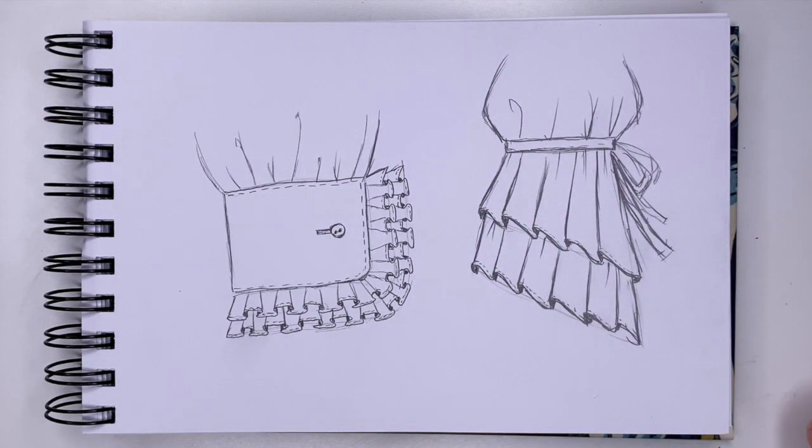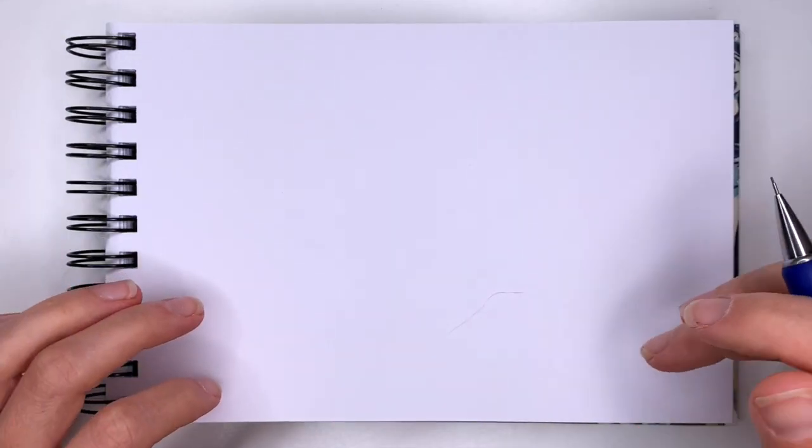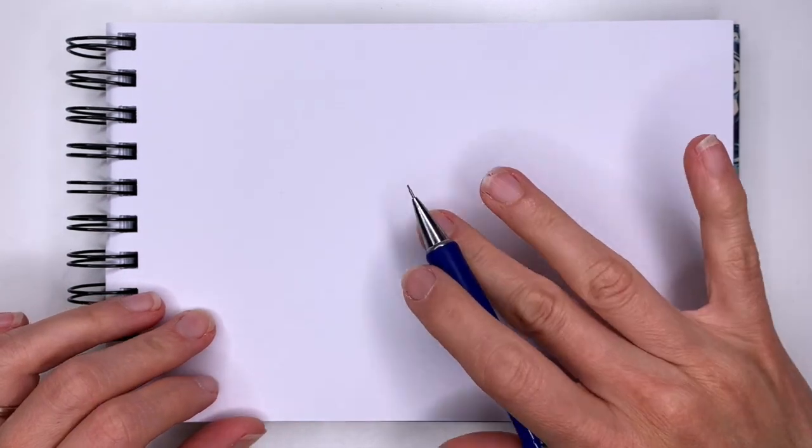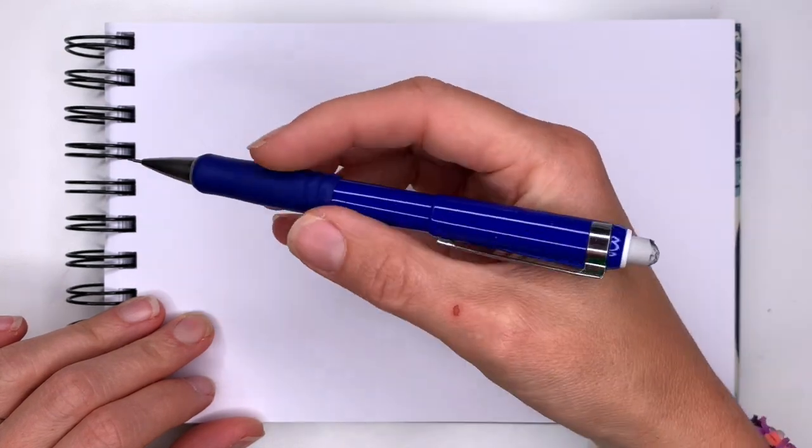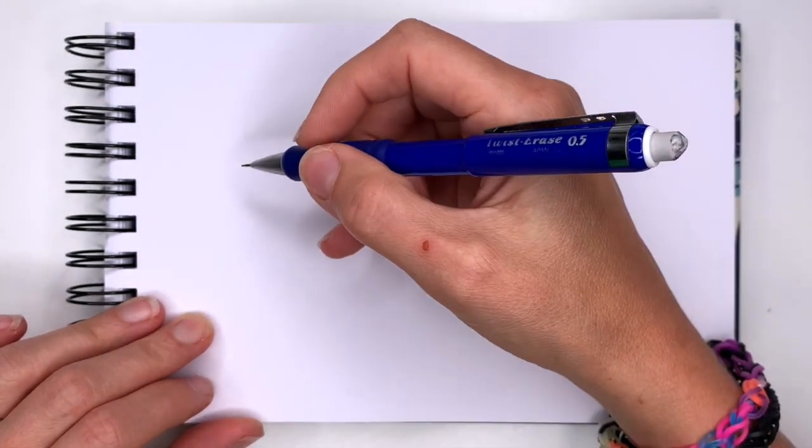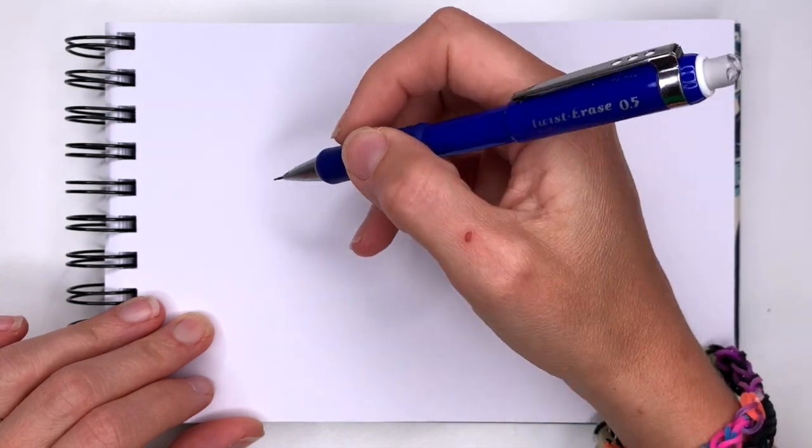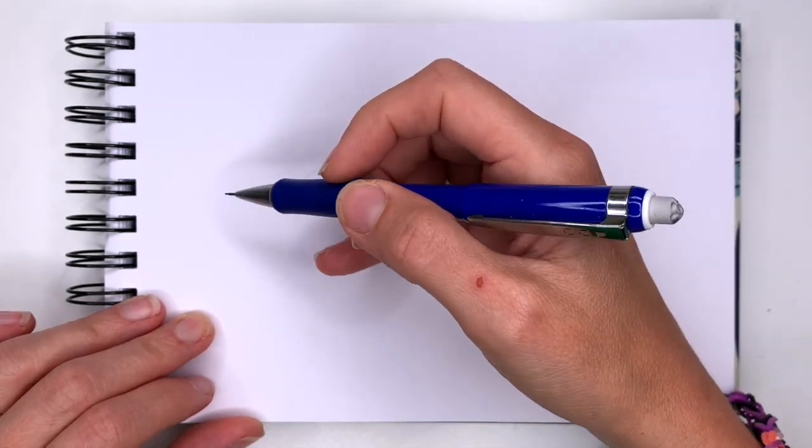If you enjoy drawing with me make sure you subscribe down below. So to complete this project you will need a piece of paper and a pencil. I'm using a mechanical pencil with 0.5 lead. My lead is 2B so it's a little softer than the regular pencil.